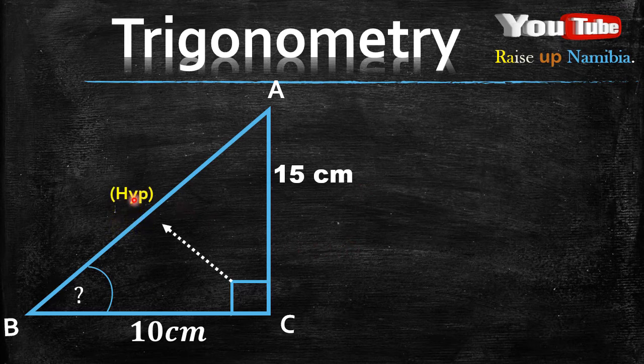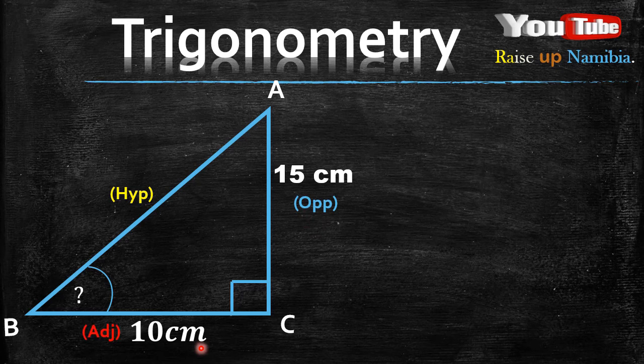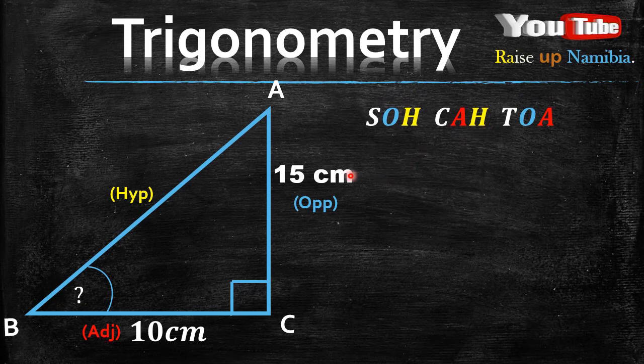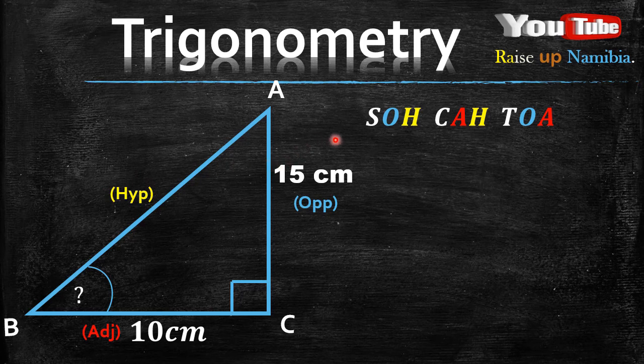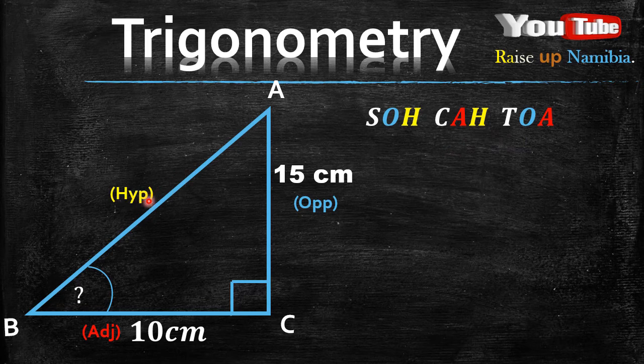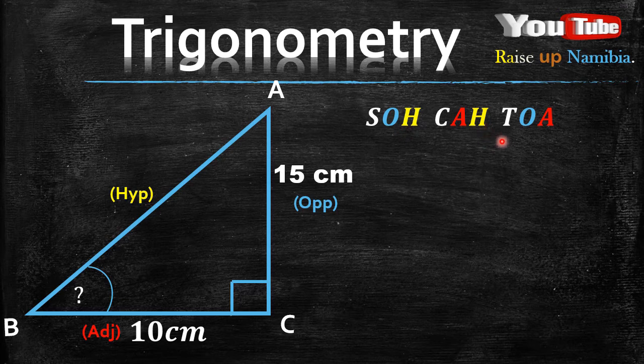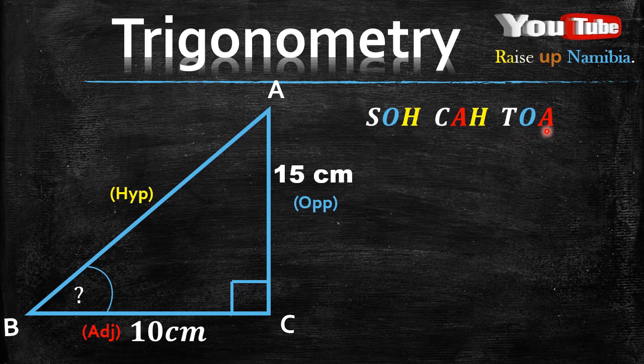Let's label our sides, the hypotenuse, the opposite, and the adjacent. Then we bring out our SOH CAH TOA word. Now that we know that our opposite is 15 and our adjacent is 10, but we don't have a hypotenuse. So in our three-letter words here, which one is not having H for hypotenuse? The first one, SOA, is having an H. The CAH is having an H. The TOA does not have an H. So we are going to be using TOA.